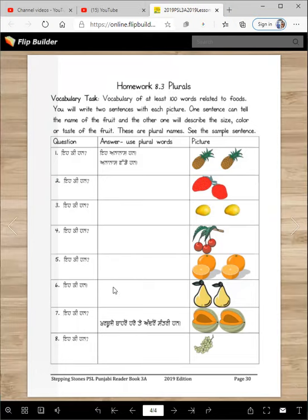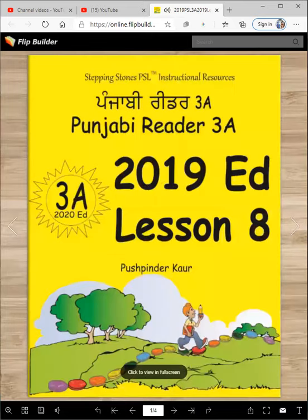Eki han, e nakha han — nakha tikoni ya han, nakha pilia han. Eki han, e kharbuje han — kharbuje baaron hare, te andron santri han. And that's the lesson for today — make sure you finish all the work. Read the lesson two or three times so that you become an amazing Punjabi reader. I will see you next time. Until then, Vahigurji Ka Khalsa, Vahigurji Ki Fateh.